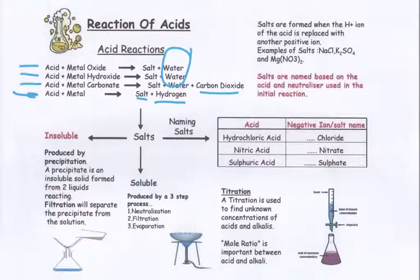All 4 of these reactions will form a salt. The name of the salt is indicated from the metal, from the metal oxide, hydroxide, etc., plus the salt name from the acid. Hydrochloric acid will give a chloride, nitric acid will give a nitrate, sulfuric acid will give a sulphate.